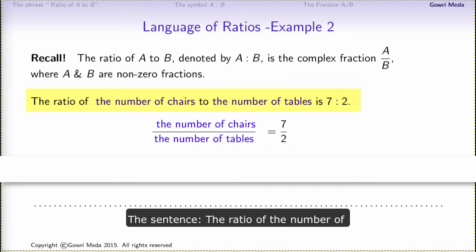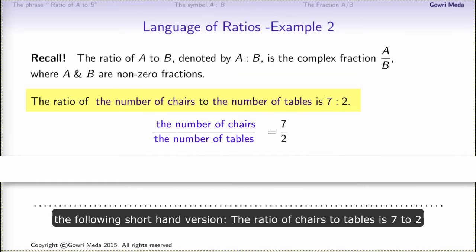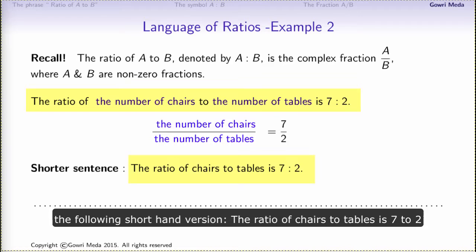One quick comment. The sentence 'the ratio of the number of chairs to the number of tables is 7 to 2' is a little bit too long. So often times you may find in word problems the following shorthand version: the ratio of chairs to tables is 7 to 2.